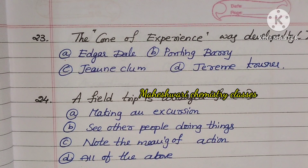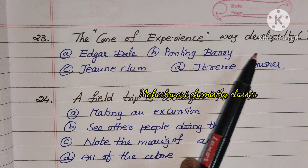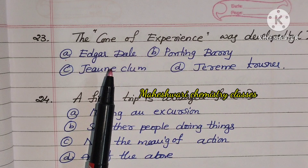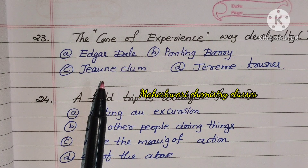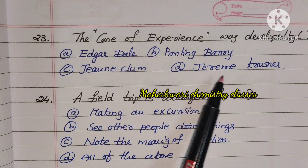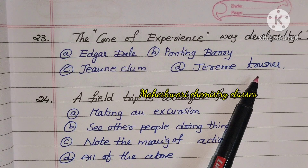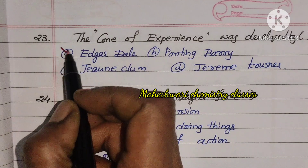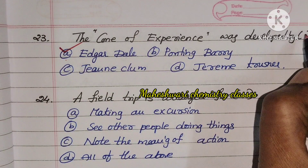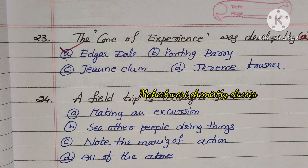Twenty-third question: The cone of experience was developed by — Edgar Dale, Pontingberry, Jack Laman, or Jerome Bruner? Direct answer: Option A is Edgar Dale.